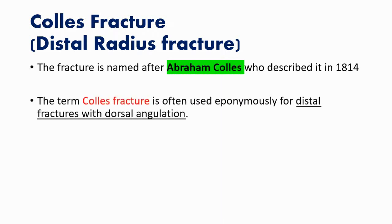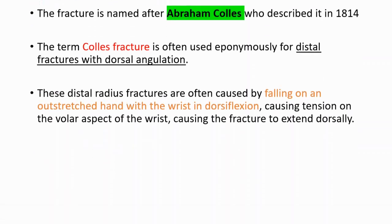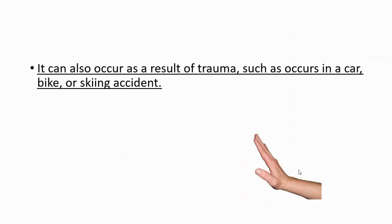The term Colles Fracture is often used eponymously for distal fractures with dorsal angulation. Distal Radius Fractures are often caused by falling on an outstretched hand with the wrist in dorsal flexion. This is causing tension on the volar aspect of the wrist, causing the fracture to extend dorsally — this is dorsal flexion.